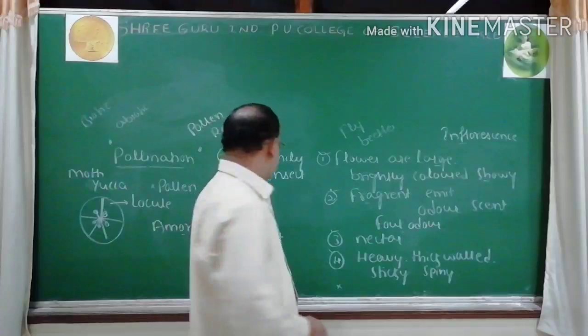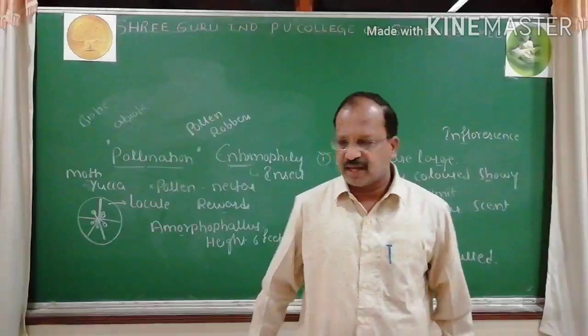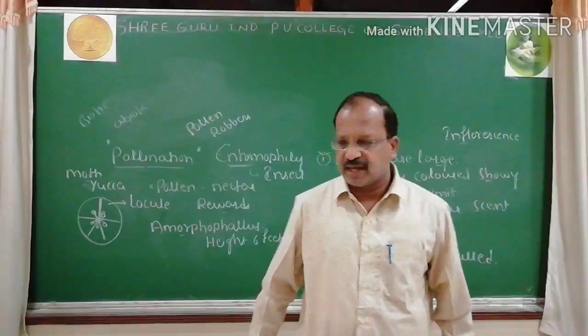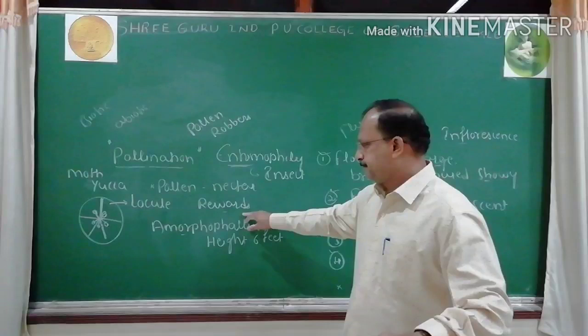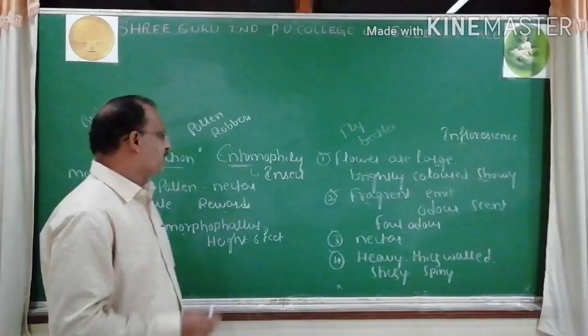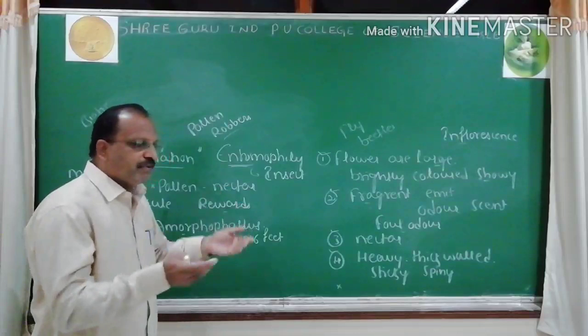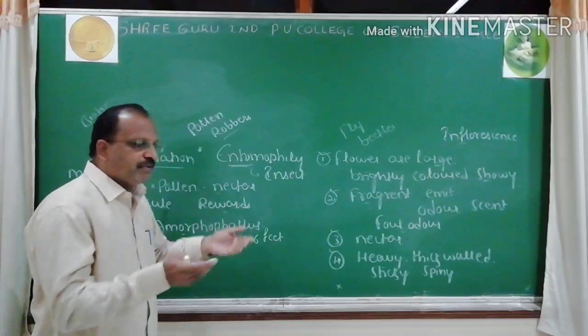Pollen and nectar are the rewards — like fees. Many insects consume the pollen and nectar without bringing about pollination. Such insects are called pollen robbers.